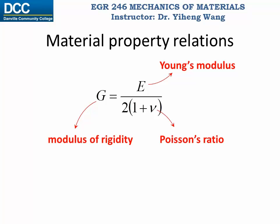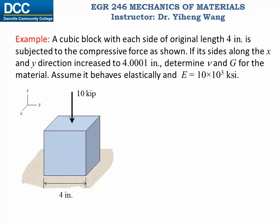So if you know any two of the three properties, you can calculate the third one. Let's look at this example: a cubic block with each side of original length 4 inches, sitting on the floor, is being compressed by the force shown. If its sides along the x and y directions increased to 4.0001 inches, we need to determine nu, the Poisson's ratio, and G, the modulus of rigidity. Assume it behaves elastically, and its Young's modulus E is 10×10³ KSI.